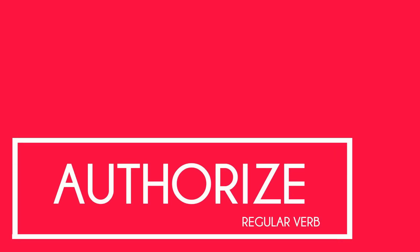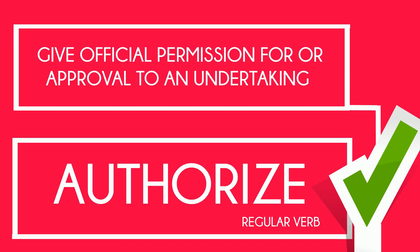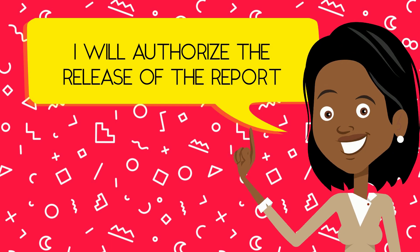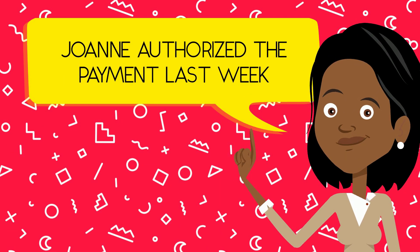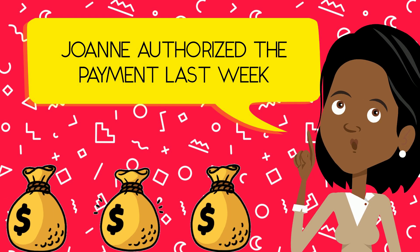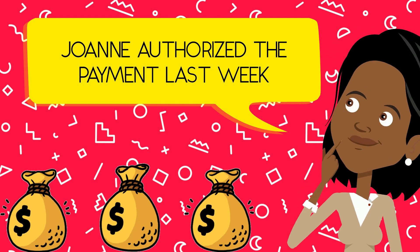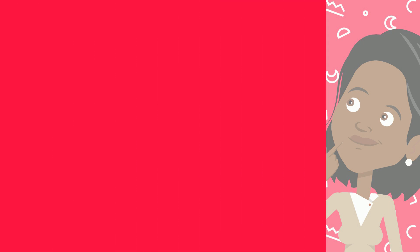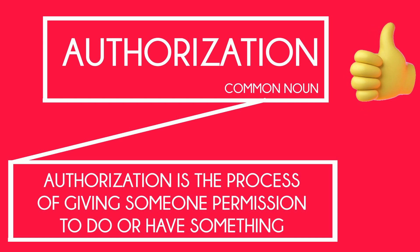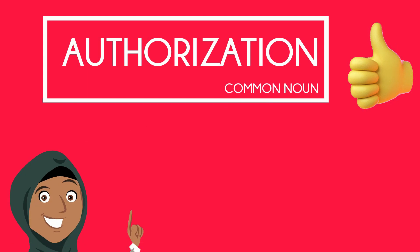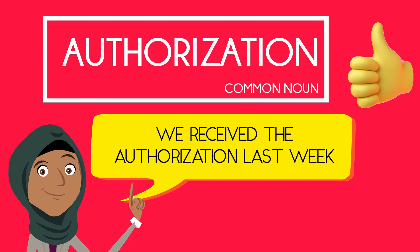Our next word is the regular verb 'authorize'. The definition is to give official permission for or approval to an undertaking. Examples: I will authorize the release of the report. Joanne authorized the payment last week. Related to this word, we also have the common noun 'authorization', which involves the process of giving someone permission to do or have something. Example: we received the authorization last week.